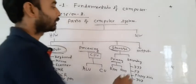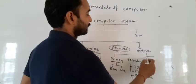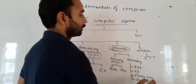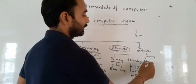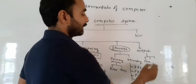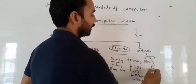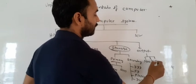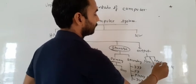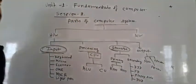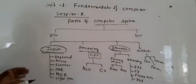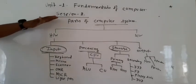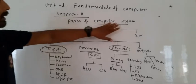And output devices - there are three types of output devices. First is monitor, second is printer, and third is speaker. So here is a brief introduction of the computer system.